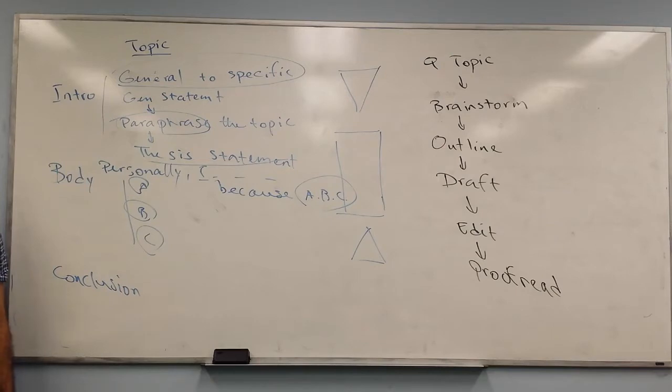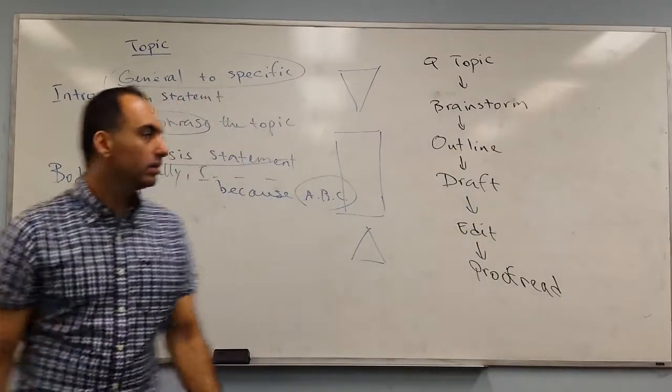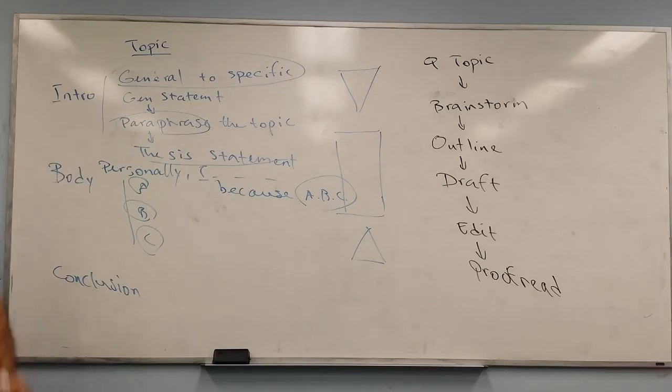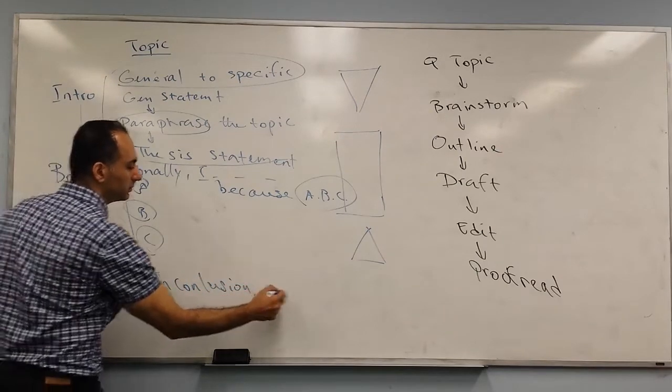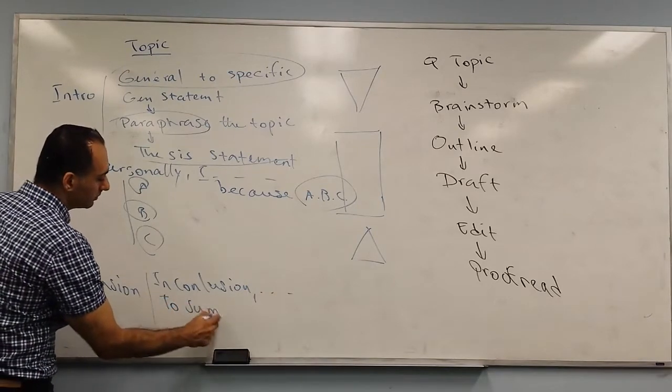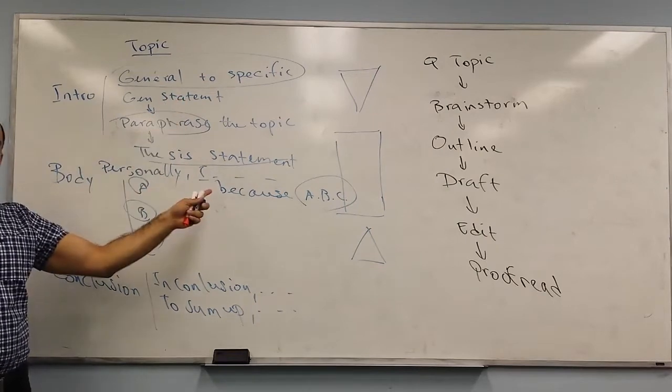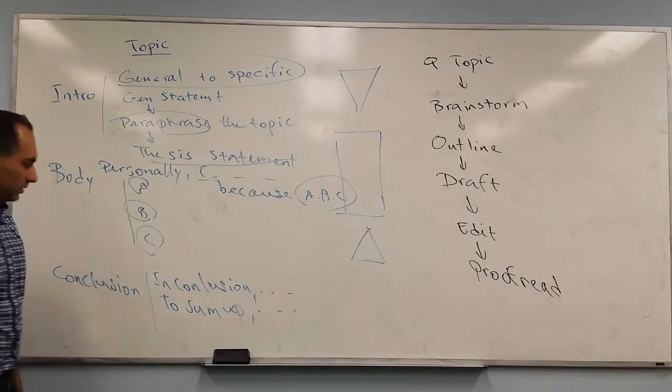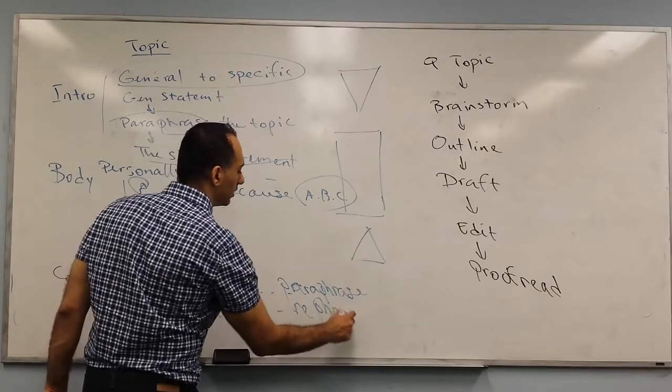In the conclusion, I'm saying exactly the same thing I said in the introduction, the opposite. That's why we have this shape. This is my introduction, this is my conclusion. I just invert my introduction and change the words, and that's my conclusion. So I would start with in conclusion or to sum up.